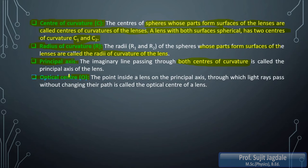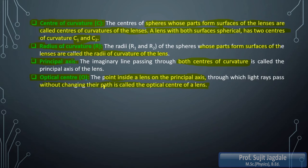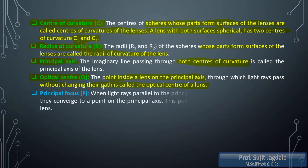The next term is optical center, which means the origin point. The optical center is a point inside the lens, present on the principal axis, through which light rays pass without changing their path. Whenever light waves are incident on that point — which is inside the lens and on the principal axis — all light waves pass through undeviated.